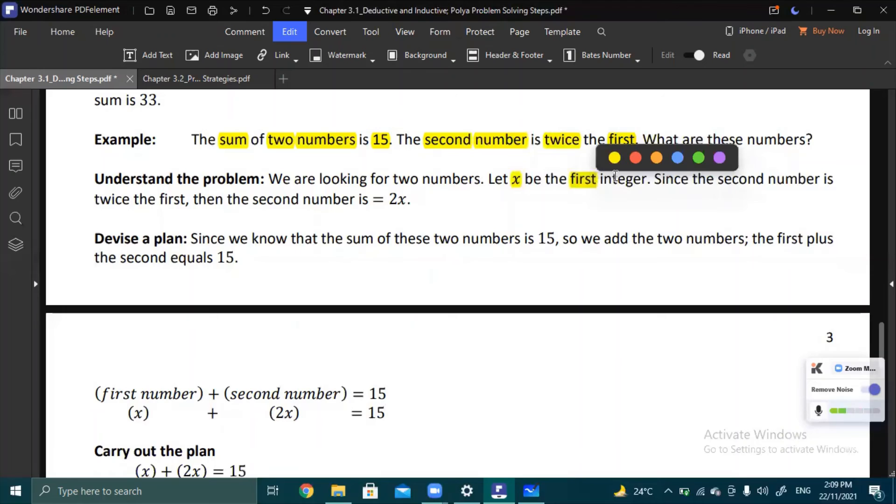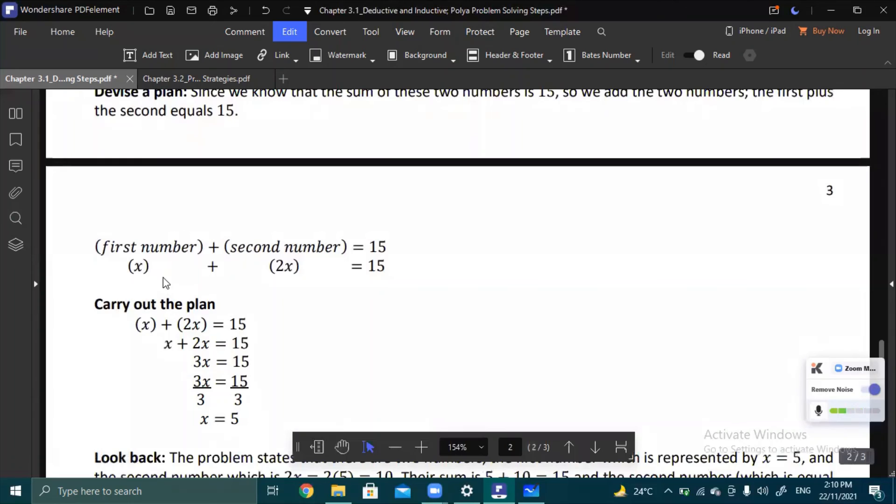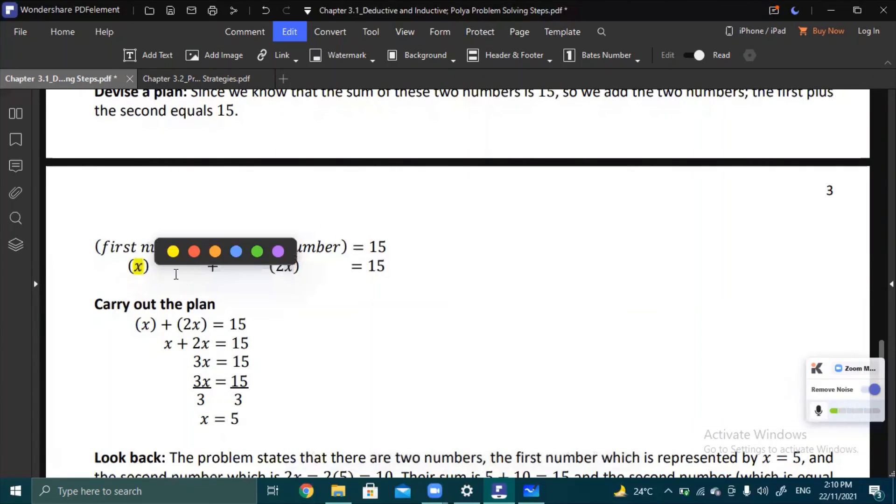Here, we let x be the first number. Notice we have a condition that the second number is twice the first integer. So the second number is 2 times the first integer, which is x. That's why the second integer is 2x. Devise a plan: we have a given that their sum is 15. So we come up with this equation: x plus 2x equals 15. That is our working equation.